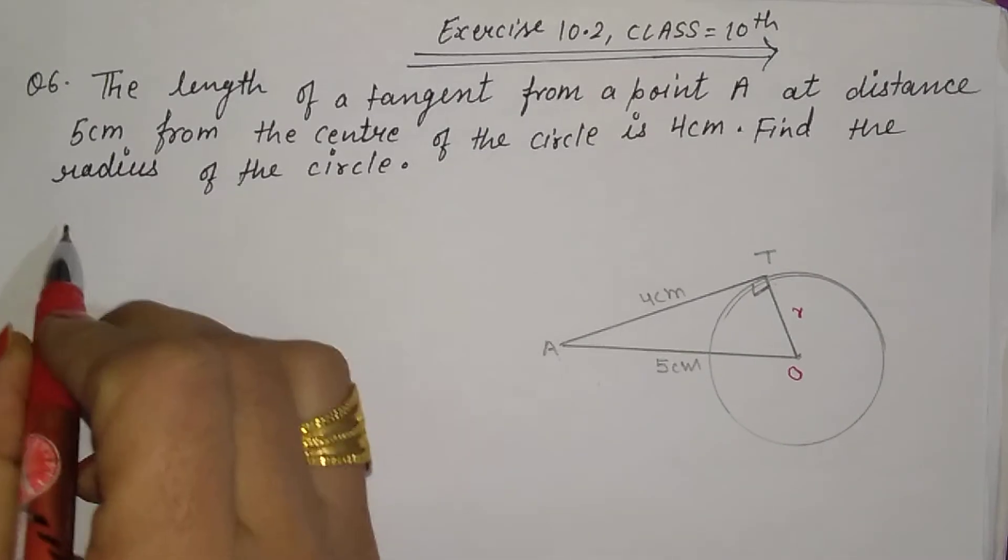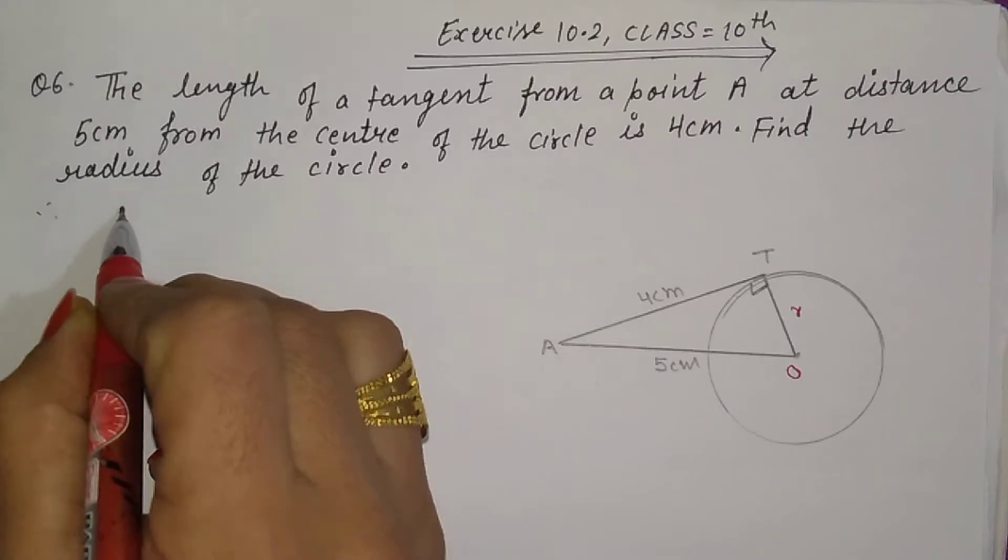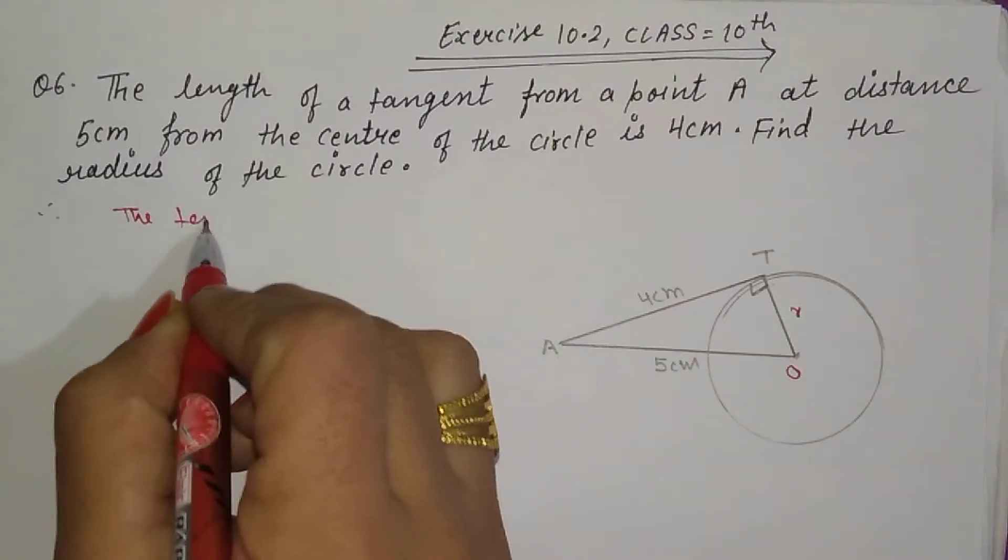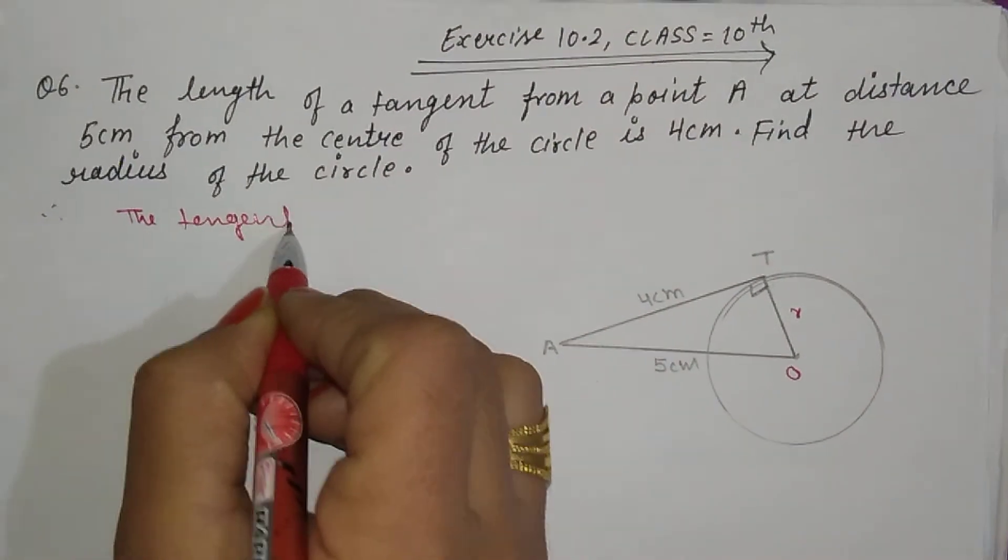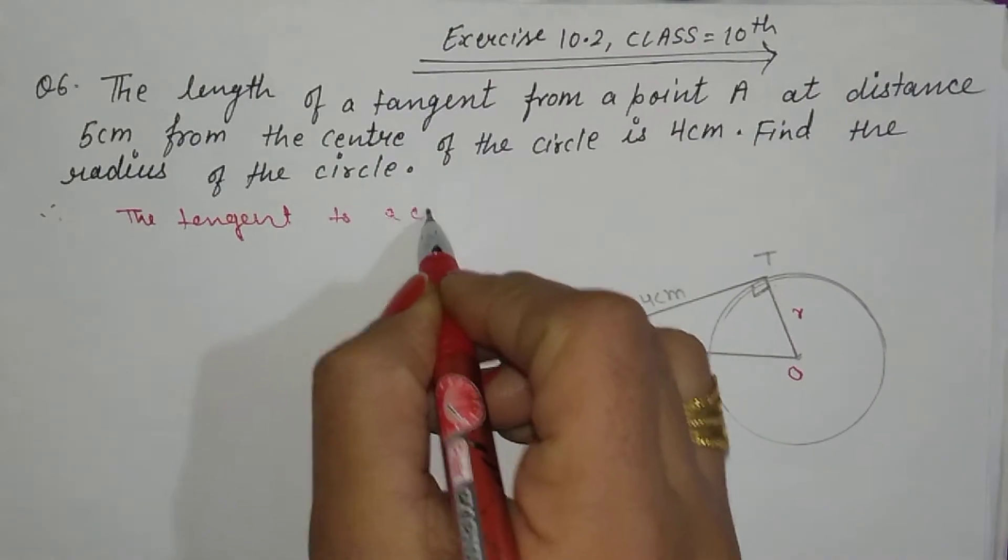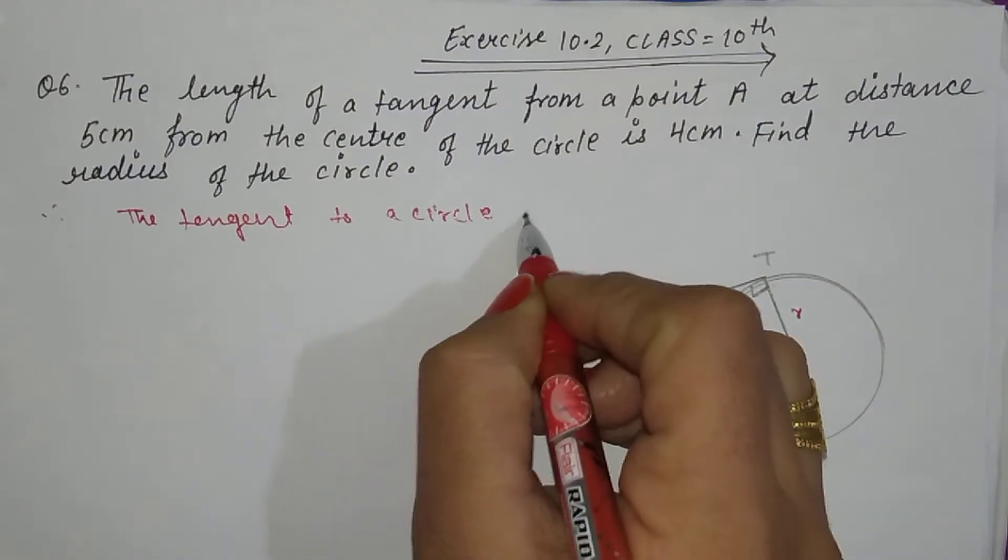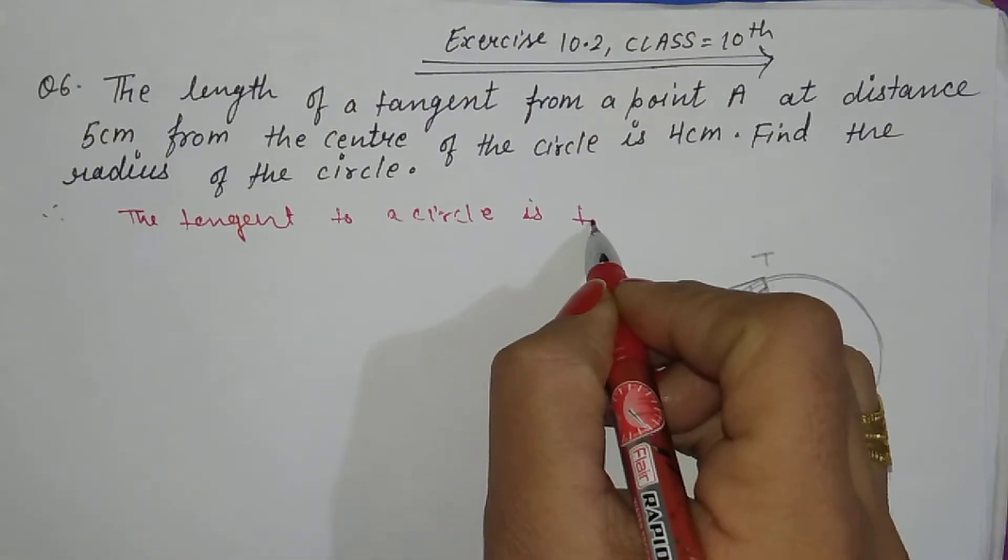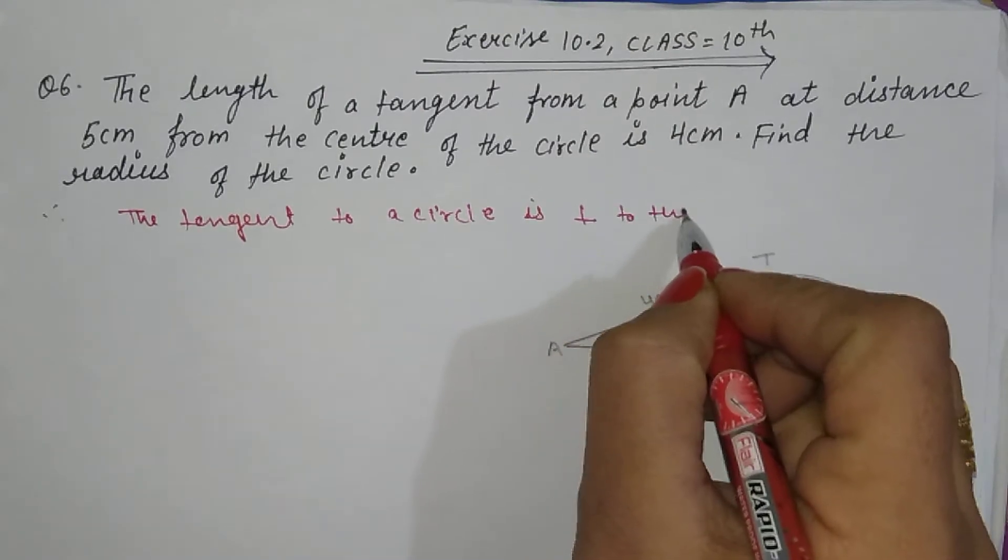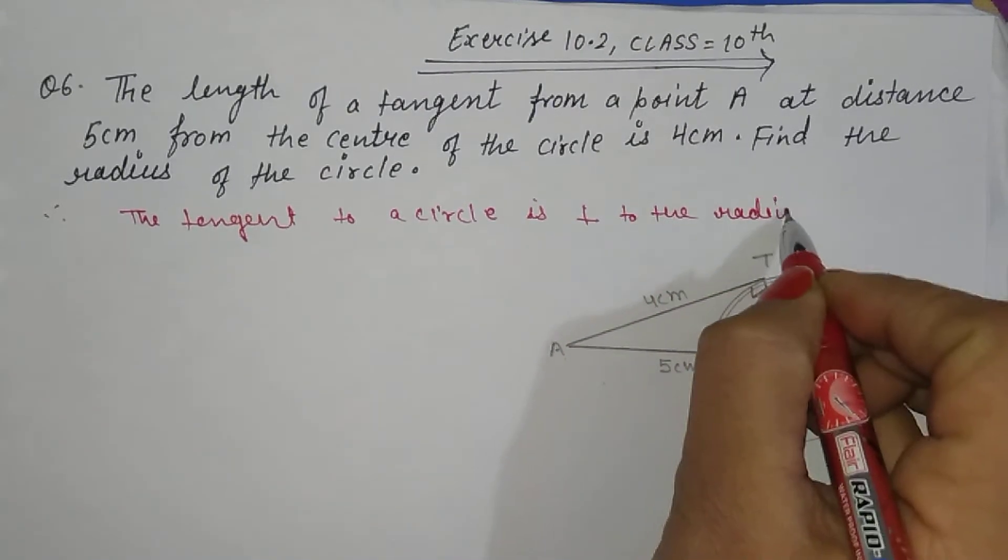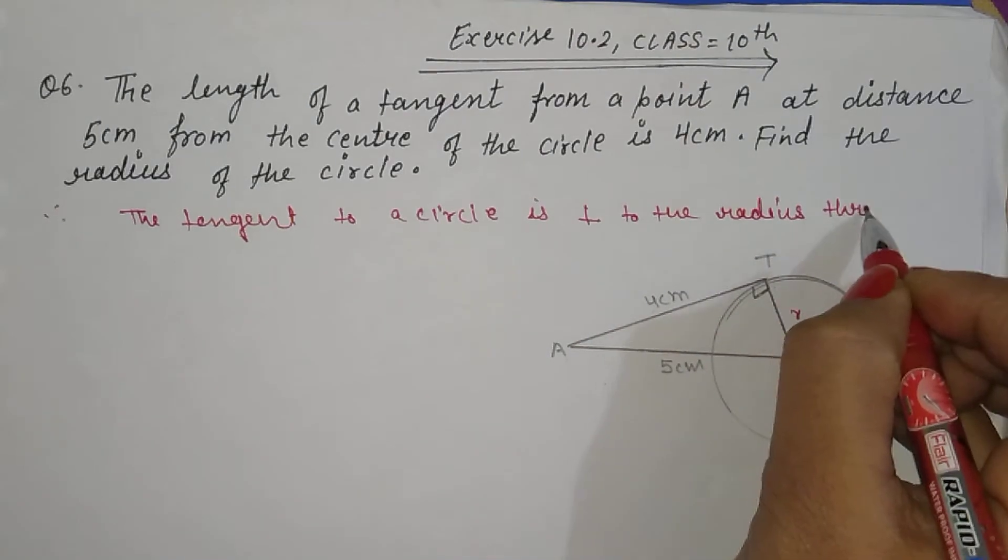So as you know that the tangent to a circle is perpendicular to the radius through the point of contact.